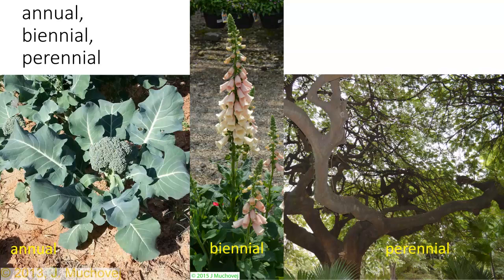On the perennial, there's only a small percentage of meristems that are produced that convert to flower meristems on an annual basis, and therefore it can continue on and on. So development — it's very important to understand these concepts of development.